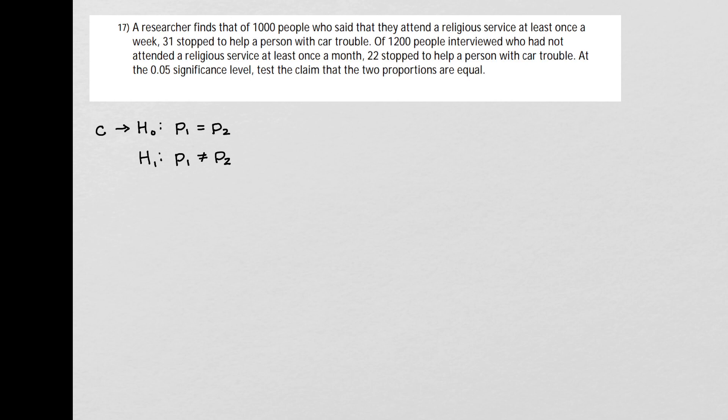Now, the next thing to do is to decide what kind of test to do. Because we have two proportions, we're comparing two proportions, so we're going to do a 2-prop Z-test. And this is number 6 in your calculator. So when I go to do that, I'm going to put in the information from the problem.